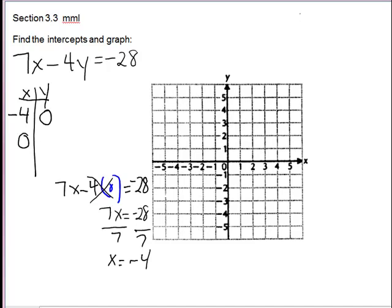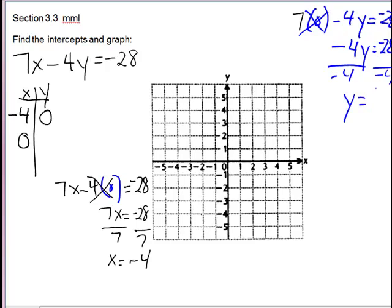I'm going to go over here on the corner since I'm out of room. Still back to the original equation. This time, I'm going to put 0 into the x. 7 times 0 is 0, so that cancels. We have negative 4y equals negative 28. Divide by negative 4. Two negatives in the division give you positive 7, so y equals 7.